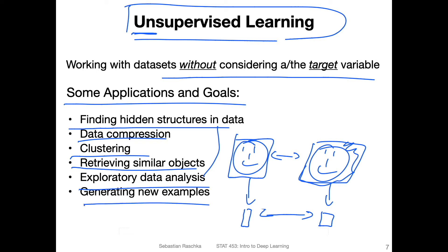Finally, one big example would be generating new examples. We can try to learn the data set distribution and then sample from it to generate new data. This will be the topic of the next lecture when we talk about variational auto encoders. I will start by showing an example today where we sample new data, but the better approach will be covered in the next lecture with variational auto encoders.